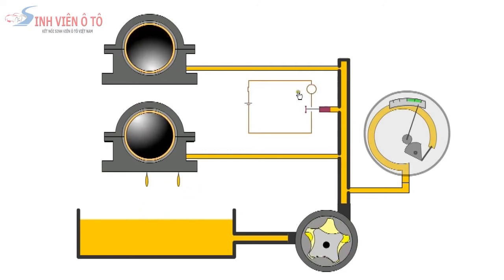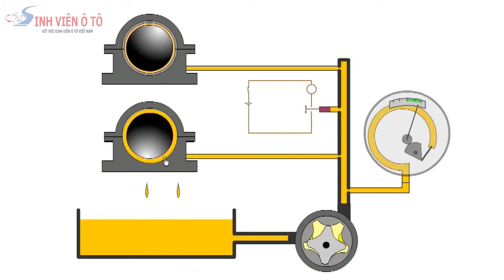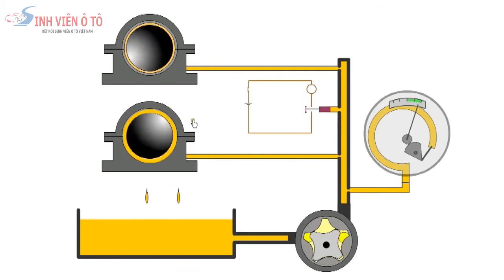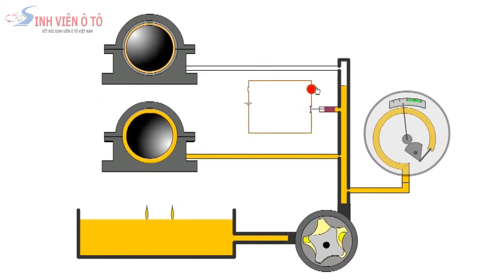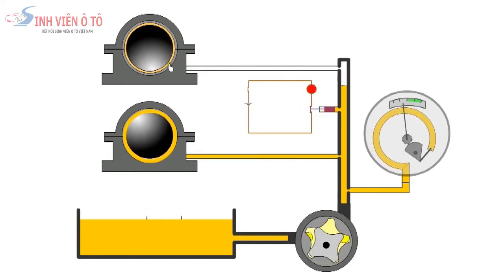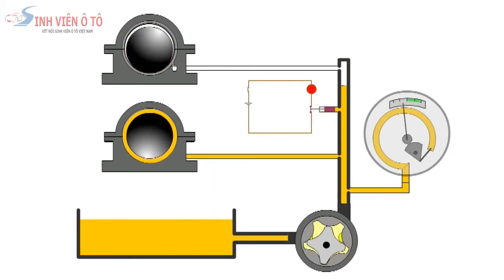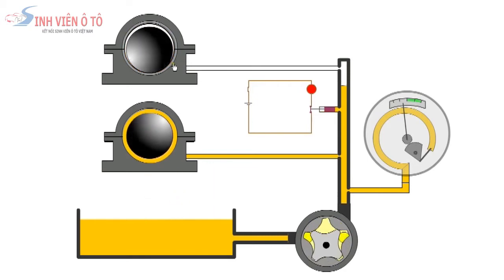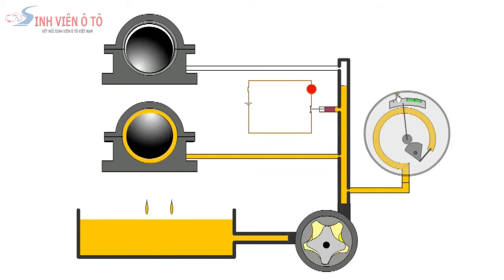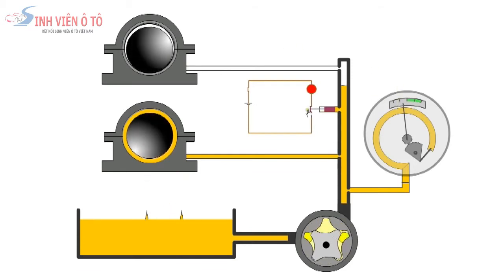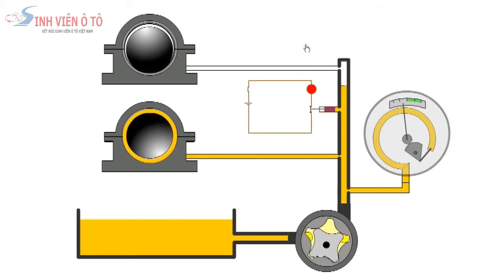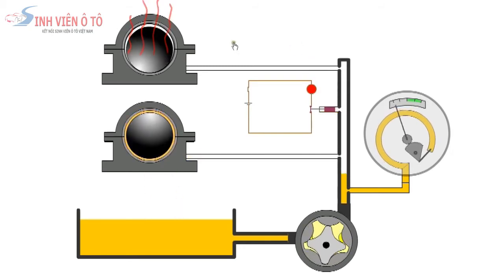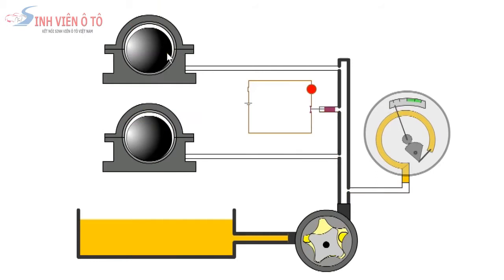If there is wear in a bearing the clearance will increase and there will be less restriction to the flow of oil. This will result in a drop in oil pressure. Without the correct pressure the oil will not reach the more remote bearings and they will be starved of oil. Now we have low oil pressure on the gauge and the pressure switch has activated alerting the driver via the oil warning light. If this situation is allowed to continue friction will cause the bearing to overheat and seize the engine.